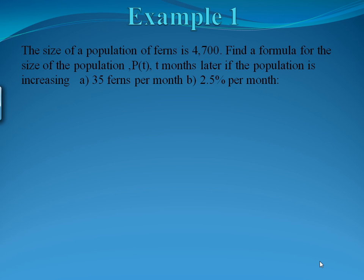Let's start with A. If there's a fixed number of ferns increasing per month, that's an absolute rate of change. Here we expect a linear equation where our initial amount is 4,700 — that's our b — and the slope is 35. So for every month we gain 35 ferns; this is a constant rate of change. So our equation becomes P of t equals 35t plus 4,700.